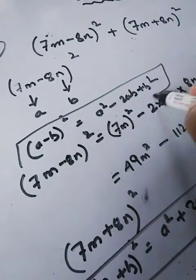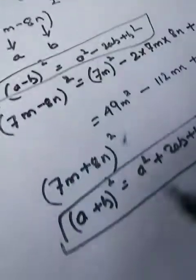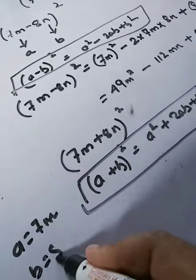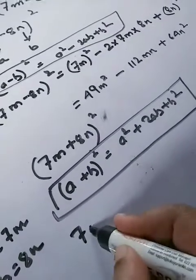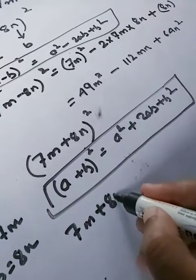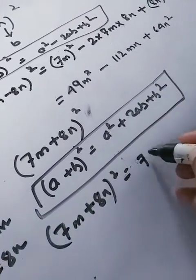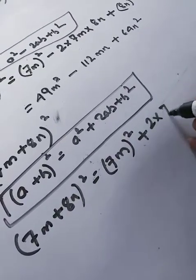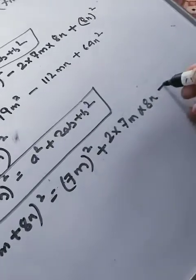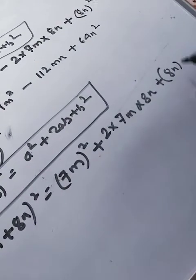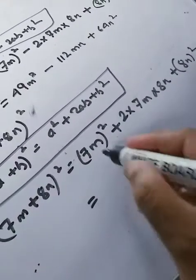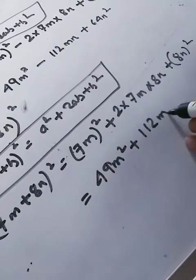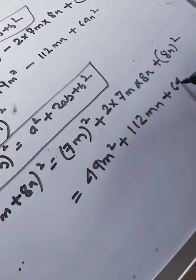Now a is 7m and b is 8n, very similar, just the application of identity has changed a bit. So 7m whole square plus 2 into 7m into 8n plus 8n whole square. The answer will be 49m square, this will be 112mn, and this will be 64n square.